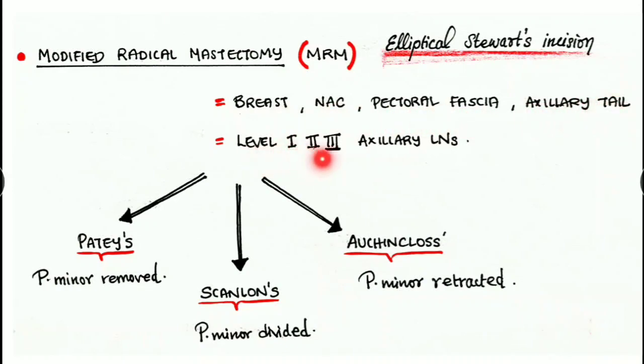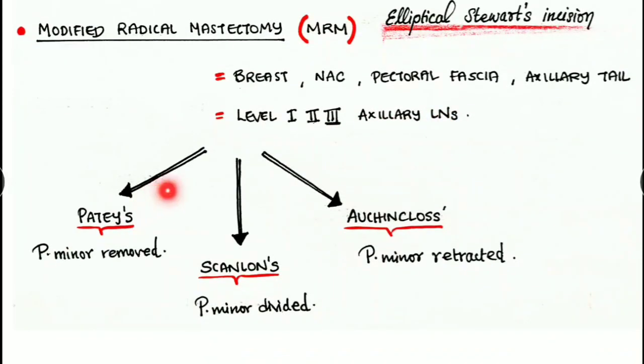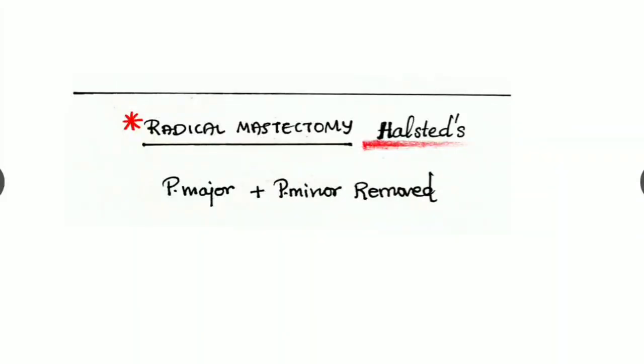It has got three subtypes: Patey's, Scanlon's, and Auchincloss. In Patey's, the pectoralis minor is removed. In Scanlon's, the pectoralis minor is divided, whereas the pectoralis minor is being preserved and simply retracted in Auchincloss. We are using this Auchincloss method in most of the cases. Compared to the modified radical mastectomy, the radical mastectomy uses Halsted incision, and here the pectoralis major and the pectoralis minor are removed.